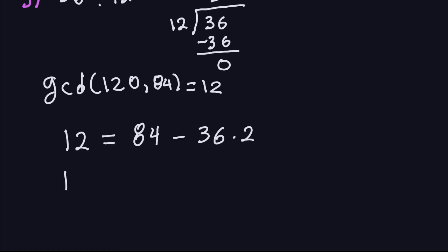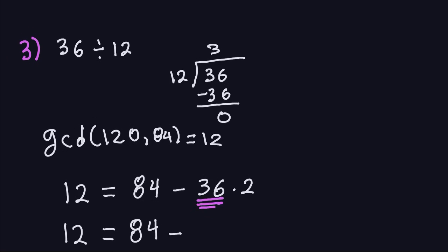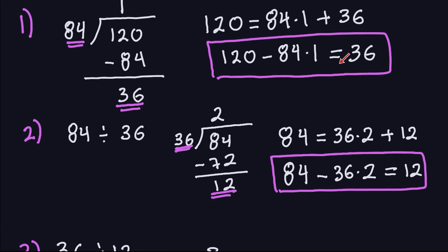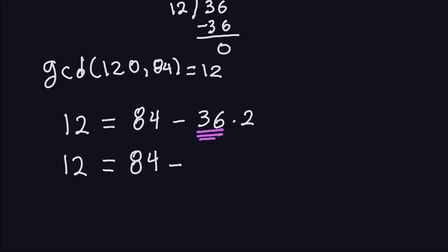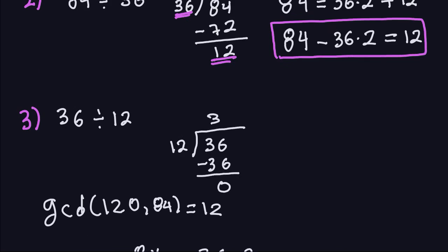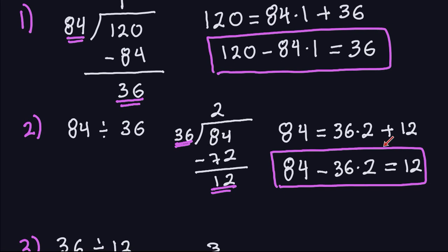Making that substitution: 12 equals 84 minus, and now replacing 36 with the quantity from the previous equation — that is, 120 minus 84 times 1 — leaving it in a parenthesis, times 2. So: 12 = 84 − (120 − 84 × 1) × 2. Don't perform the operations yet, just leave it indicated. The quantity in parentheses is exactly 36, coming from substituting backwards.